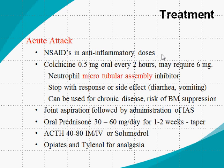The second drug available for treatment of acute attack is the age-old colchicine. Colchicine can be given in a dose of 0.5 milligrams orally every two hours, up to a dose of 6 milligrams in the first day. It acts as a neutrophil microtubular assembly inhibitor. The neutrophils phagocytize the needle-shaped urate crystals, which elicit a response producing chemokines and cytokines. This drug inhibits microtubular assembly so that inflammatory mediators are not produced by the neutrophils and macrophages.